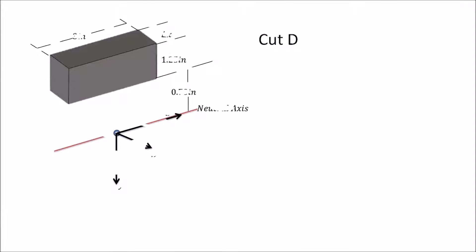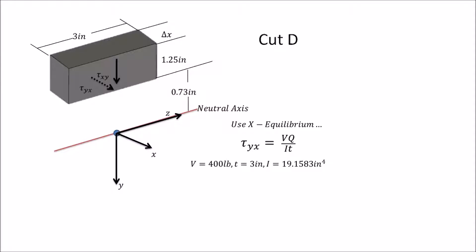Cut D is across the same line as cut C, but looking at the flange side. Using VQ/It with V = 400 pounds, the thickness is now 3 inches since we cut across the entire length of the flange, and I = 19.1583 in⁴. Q is 3 × 1.25 × (0.73 + 0.625) inches, giving Q = 5.08125 in³. Plugging in, τ_yx ≈ 35.36 psi.